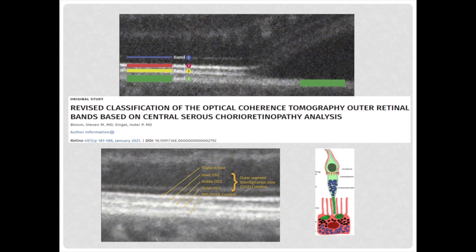The revised classification of OCT outer retinal bands based on CSCR — Bloom et al. said that the entire hypo, hyper, and hyporeflective bands correspond to the outer segment interdigitation zone. They call these zones as inner OSIS, the central hyperreflective one is the middle OSIS, and the below one is the outer OSIS.